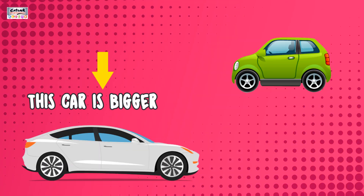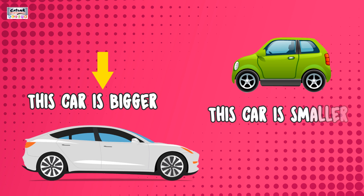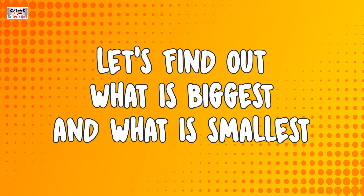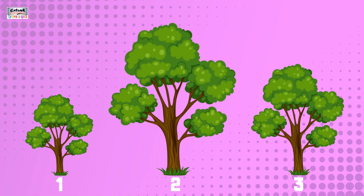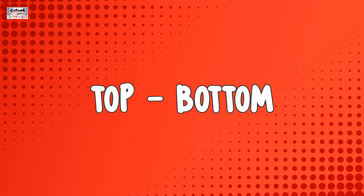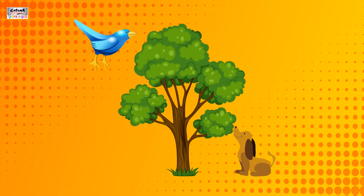This car is bigger, this car is smaller. Biggest and smallest. Let's find out what is biggest and what is smallest. From these three trees, which is biggest? Yes, the second tree is biggest. From these three animals, which is the smallest? Yes, the third — the rabbit — is smallest.